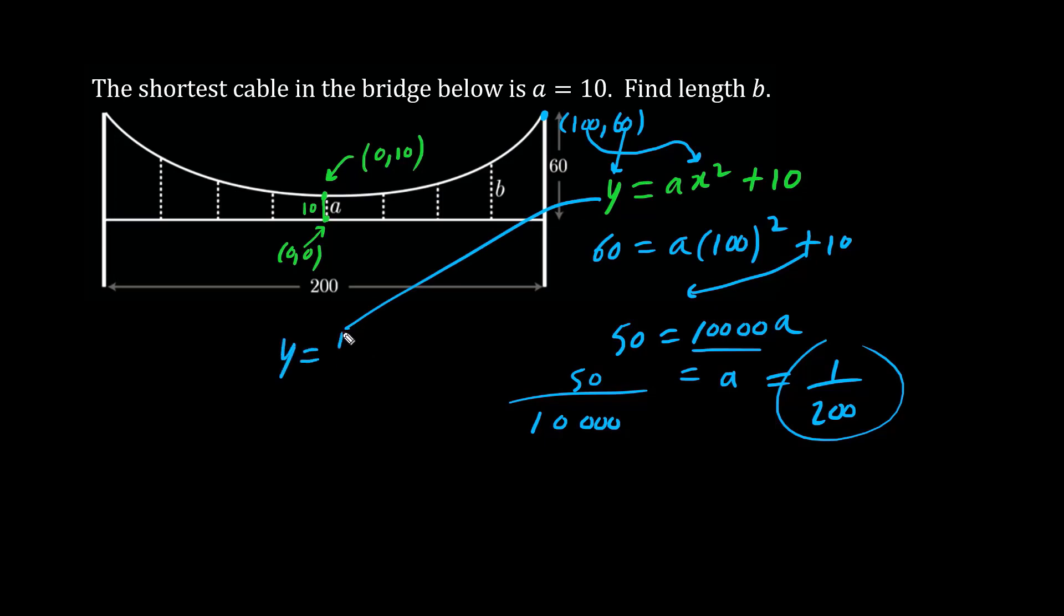Y equals 1 over 200 times x squared plus 10 is the equation of this bridge. We'll assume that these cables dropping down vertically are equally spaced. So we have 0 here and we have 1, 2, 3, 4 parts. So over here we have 100, so half of that would be 50. One quarter of that would be 25, and adding another 25 we have 75. The x value is 75 for this particular cable.